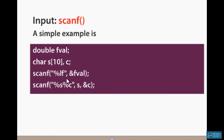Next, for a string variable and character variable: if you have a string variable, %s is used and the value is stored in the string. Then %c is the character variable, so the address of c is used to store the value.